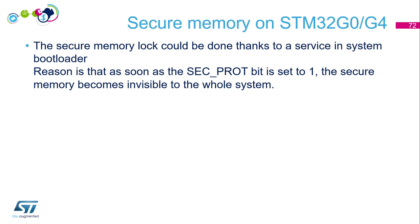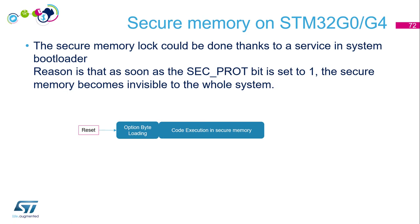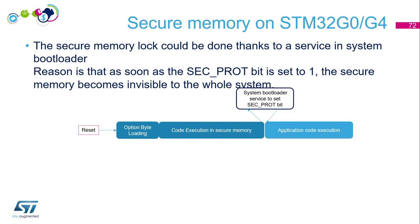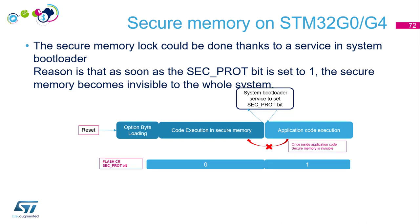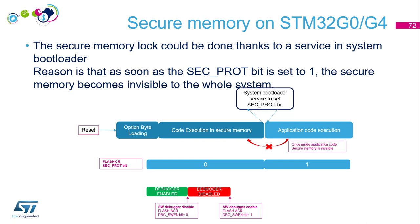To summarize the flow: first the reset, then option byte loading done by hardware, then code execution in secure memory, then a system bootloader service call to set the sec_port bit, after which the secure memory becomes invisible and we jump to the application code. During application code execution, the secure memory is completely invisible. I will show the flash control register sec_port bit location and the debugging link, which is enabled by default. You can choose to disable it for sensitive or secret operations — just remember to re-enable it afterward to be able to connect to your target.